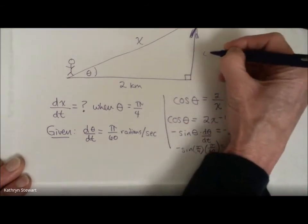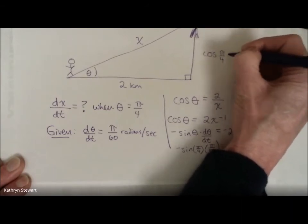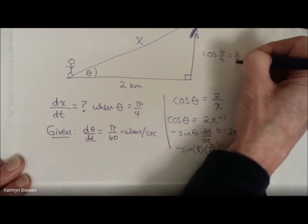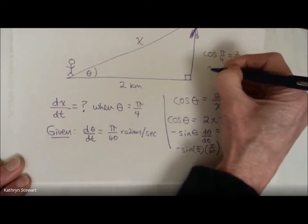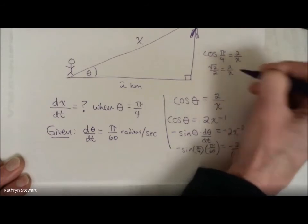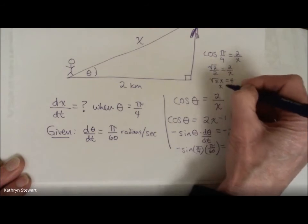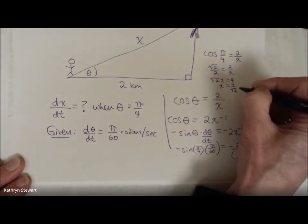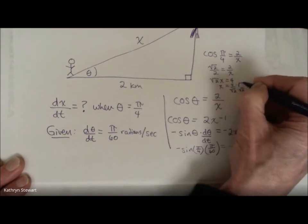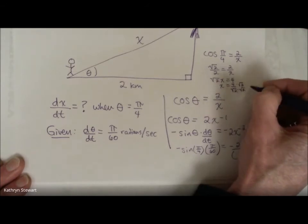Off to the side, I can just say, at this instant when theta is pi over 4, can I find x? Yes, I can. Cosine of pi over 4 is the square root of 2 over 2. I can do a little cross multiplication. Product of the means equals product of the extremes. I get 4 divided by the square root of 2. If I feel like rationalizing the denominator, which I do, that's going to give me 4 times the square root of 2 over 2, also known as 2 times the square root of 2.